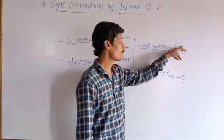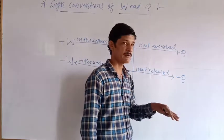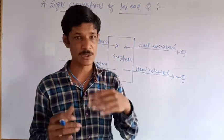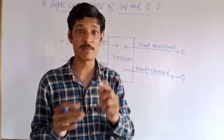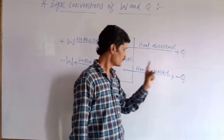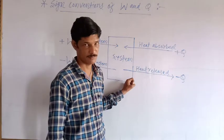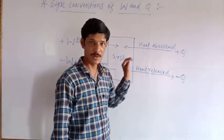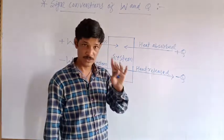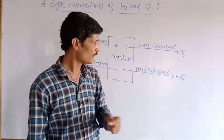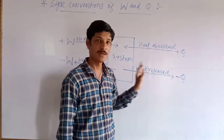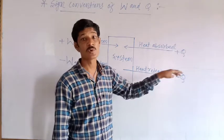The sign minus Q indicates it is released by the system to the surroundings. Plus Q means it is absorbed by the system from the surroundings; minus Q means it is released by the system to the surroundings.